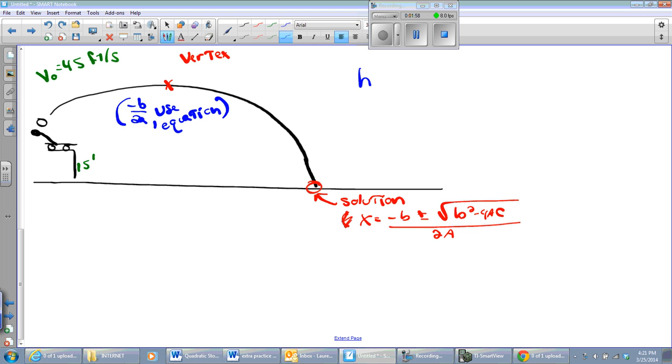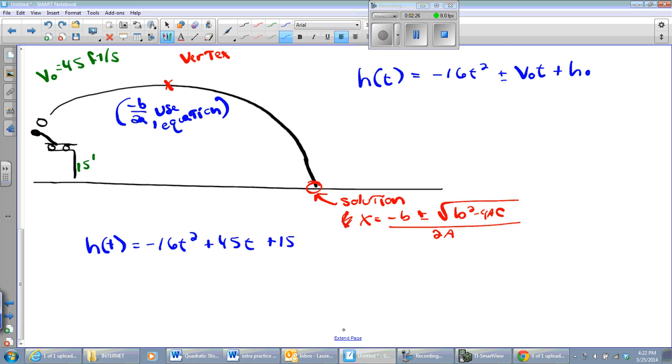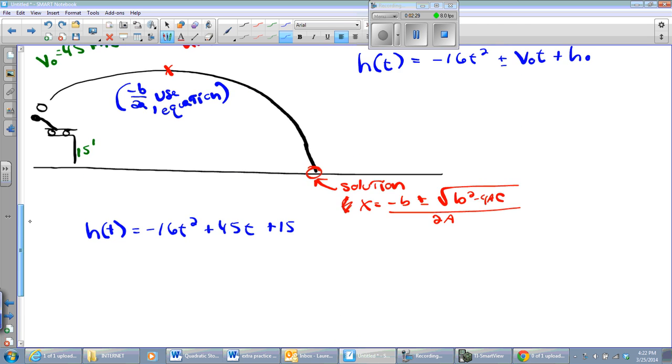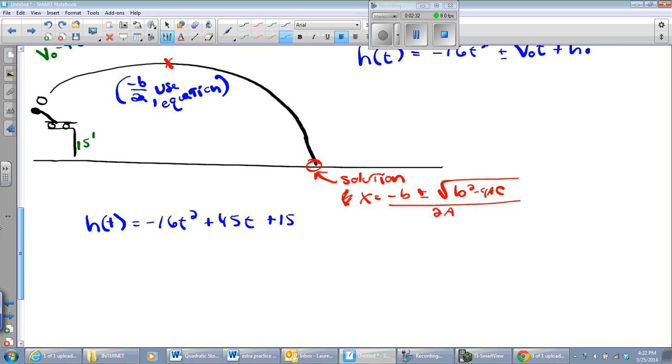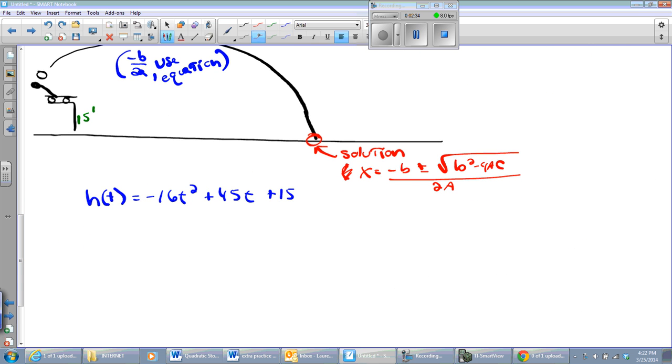Now, I know that the high point is the vertex. If any of the problems ask me about how high it went, I'm going to find the y coordinate of the vertex or the h coordinate. I know that this is going to be a solution or where the parabola touches the ground. So this is a solution. It's an x-intercept. So for this, I'm going to use the quadratic formula.